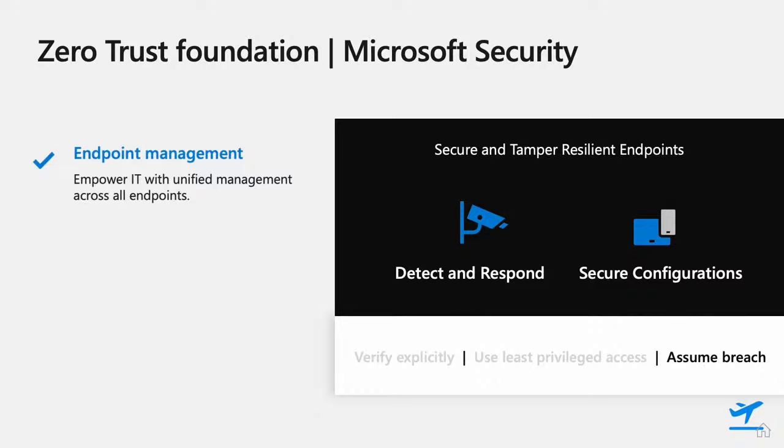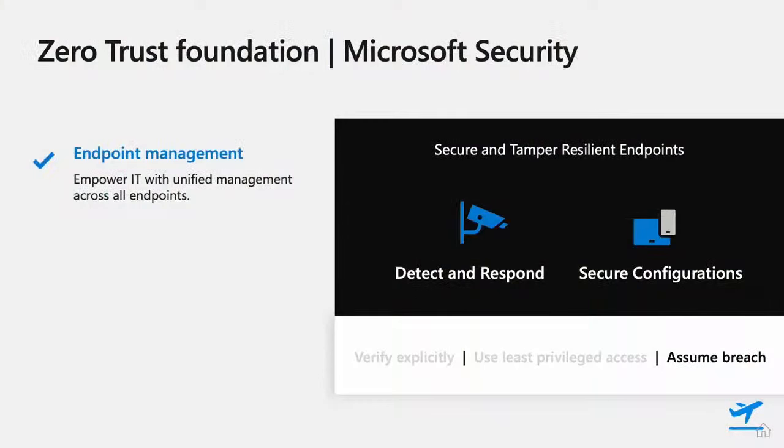Both of these contribute to the assume breach aspect of Zero Trust. They could also contribute to verify explicitly — making sure my device is in the right state before I grant access to a resource — or to least privilege access, where I have a device that is locked down and users who are running with a least privilege model, having only what they need and only those elevated privileges when they need them.